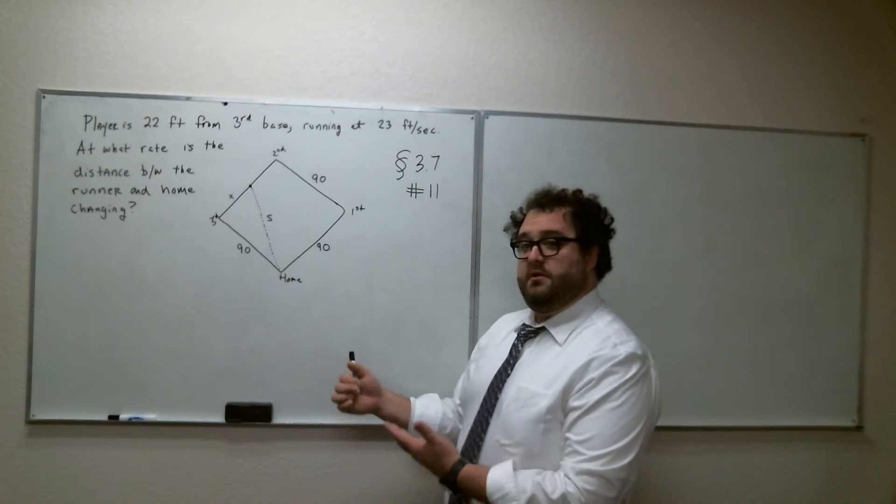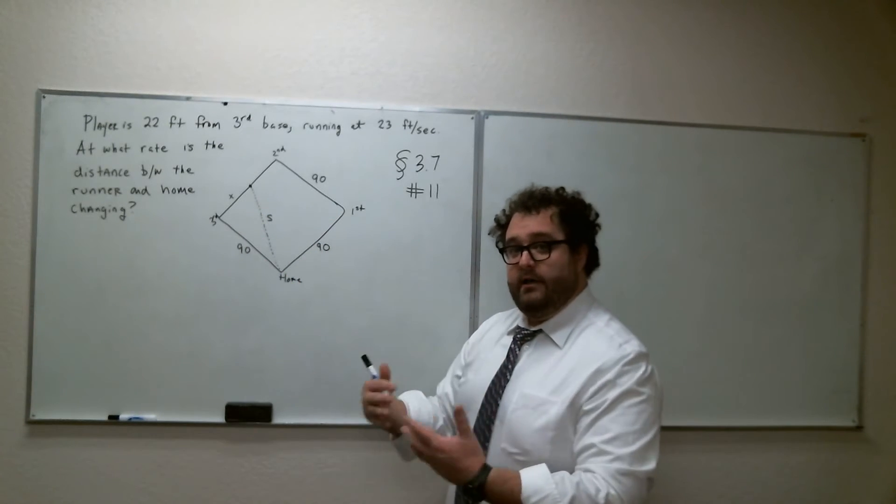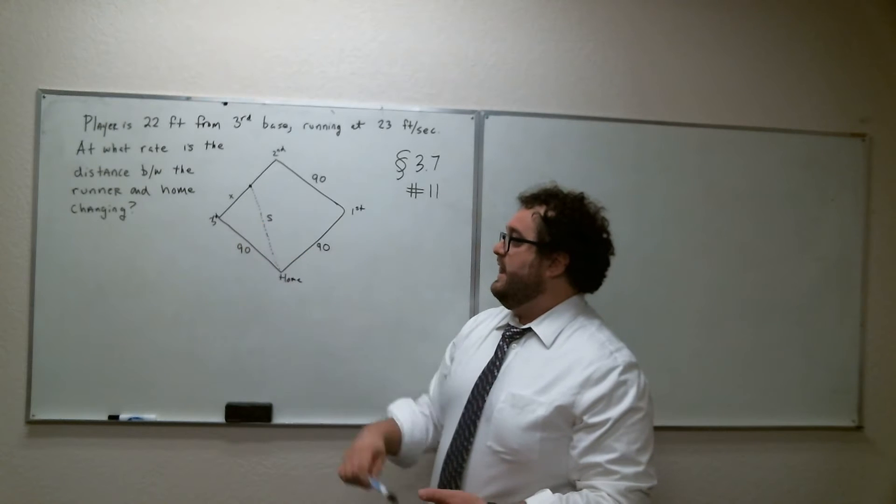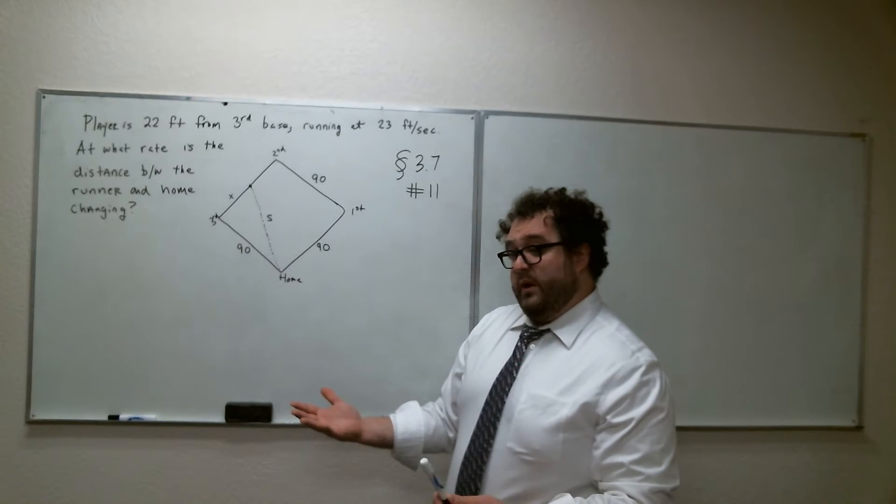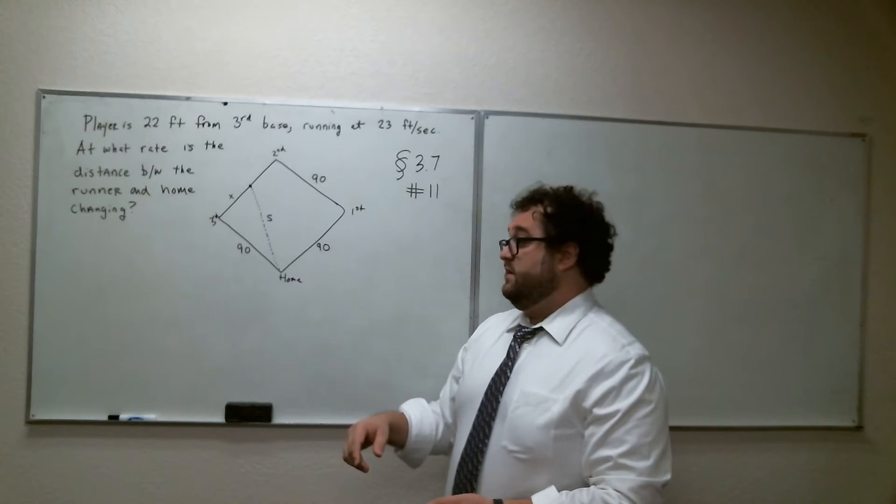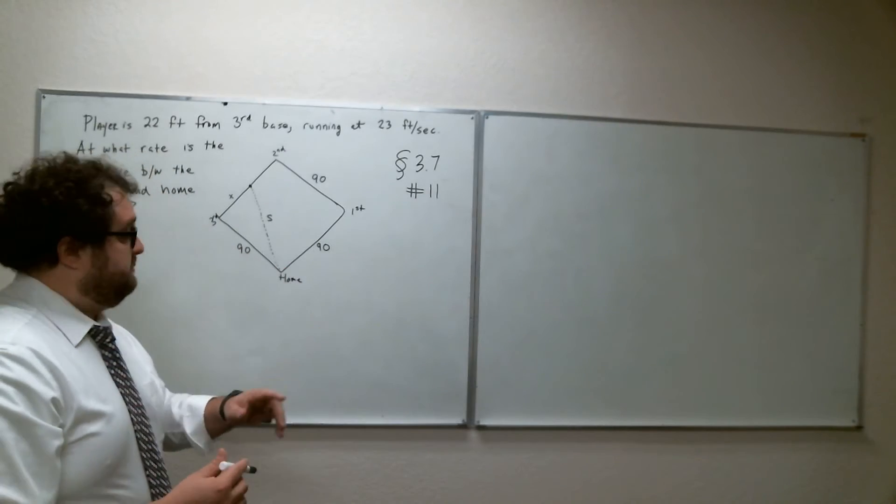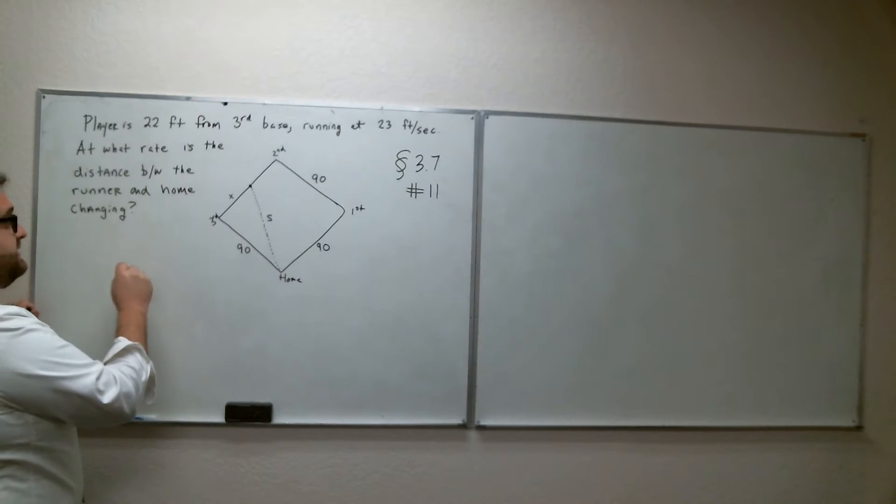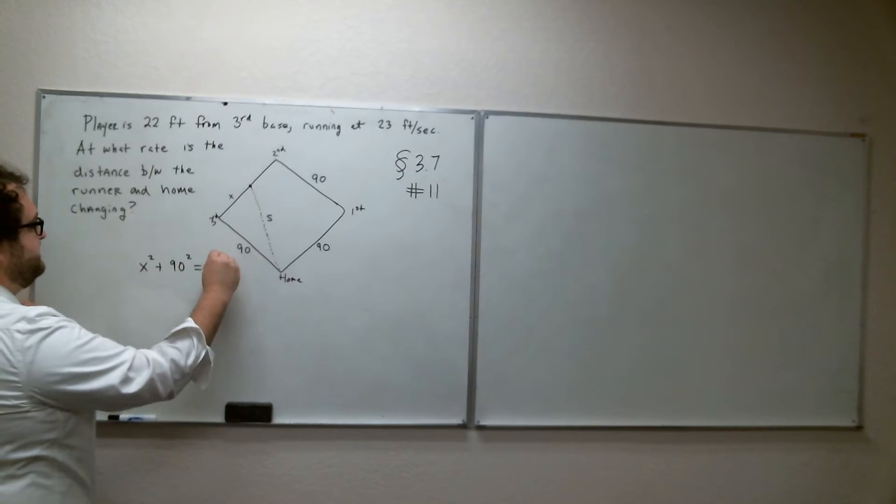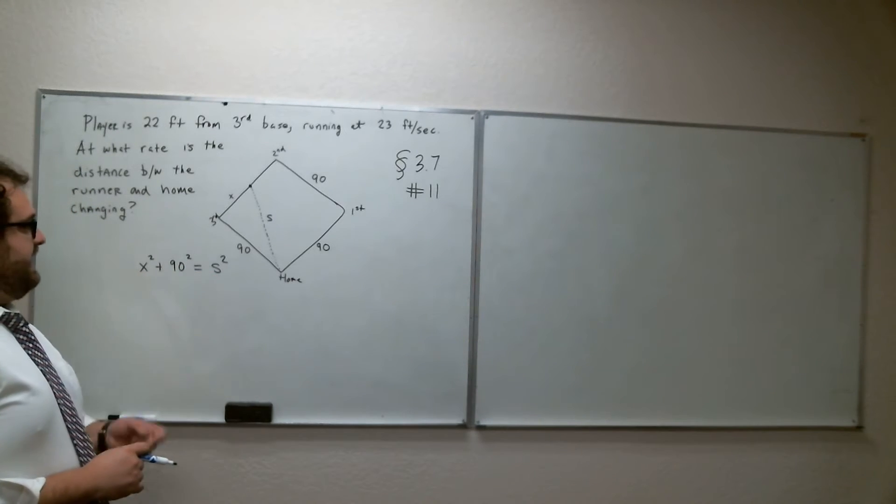So let's write the Pythagorean theorem just with the current variables. Remember, the idea here is to relate the variables that we're working with. We want to relate S and X. And typically, whenever you have a right triangle, but you're not dealing with angles, typically you're going to use Pythagorean theorem. Okay, that's usually a pretty safe bet. So let's see here. We can say using the Pythagorean theorem, we can say that X squared plus 90 squared equals S squared. Okay, that relates X and S.